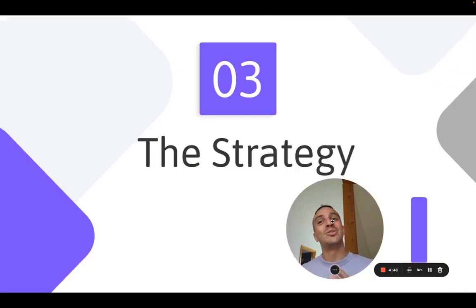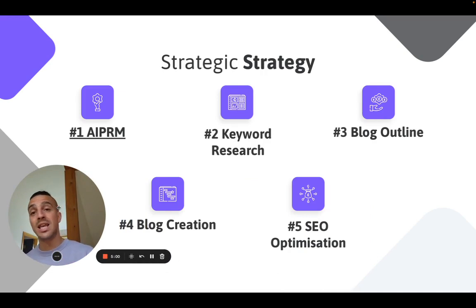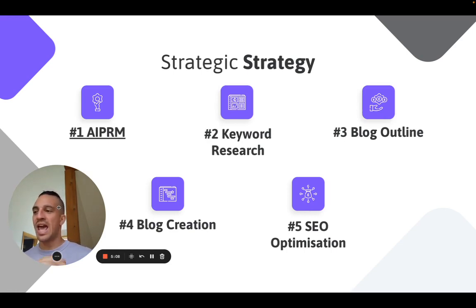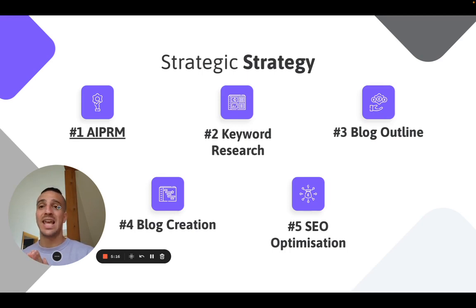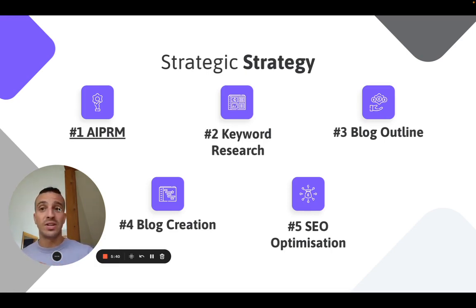We get to the meat and potatoes of the presentation, which is the strategy I've been using to generate high-ranking content on Google. We start with five main aspects. The first thing is a plugin called AIPRM — an add-on to ChatGPT. The second is keyword research. We'll do the blog outline first to see if we're happy with it before we get ChatGPT to write the whole thing. We'll then create the blog section by section, and while we're doing that, we'll also do more SEO optimization for our blog. If you haven't worked in SEO or digital marketing, don't worry — this makes it very simple with the help of ChatGPT, I promise.